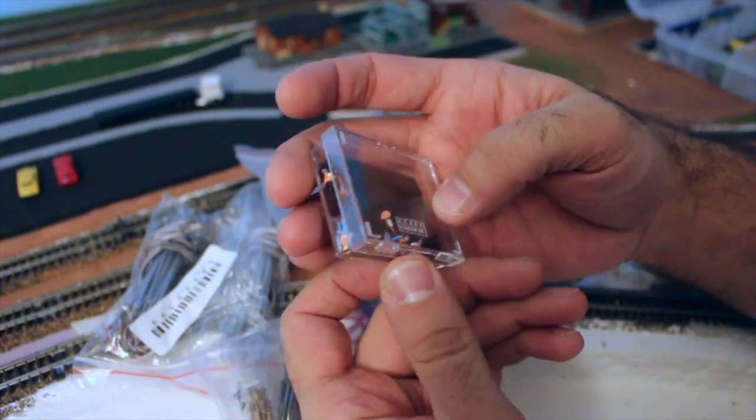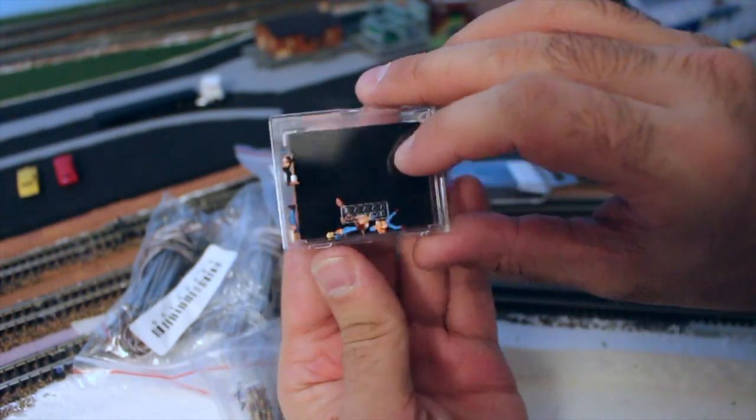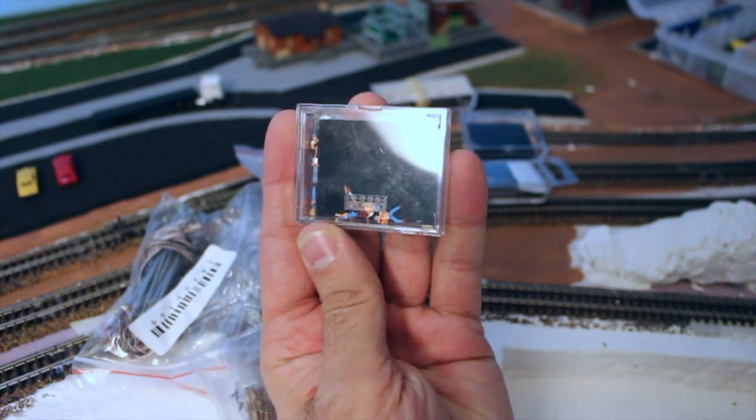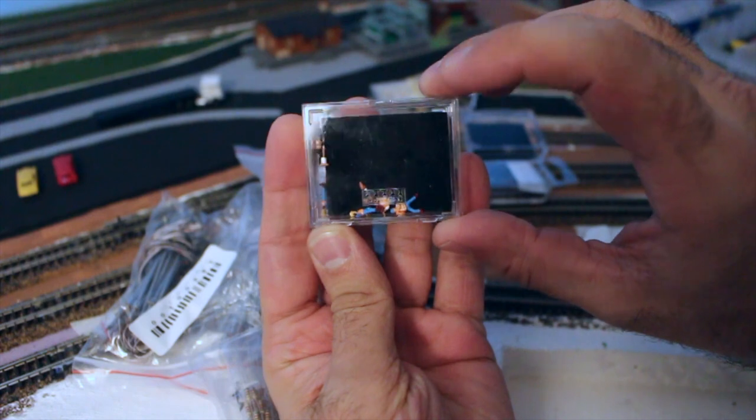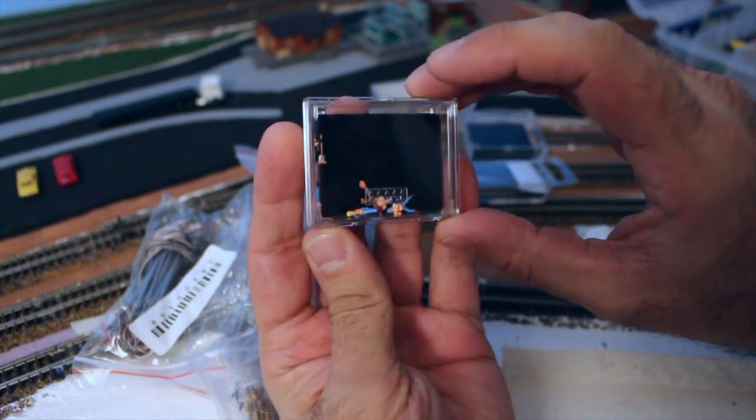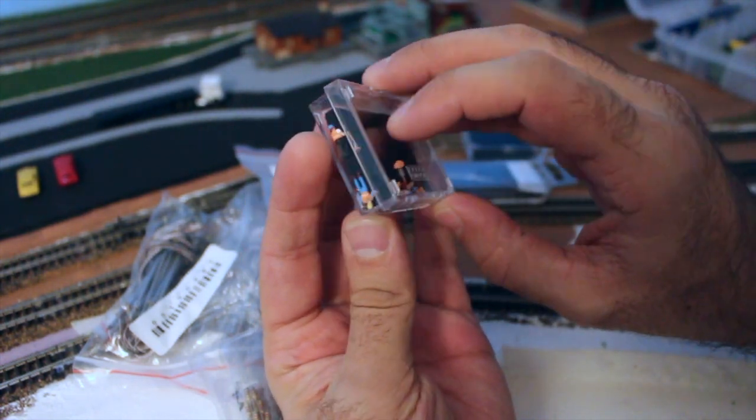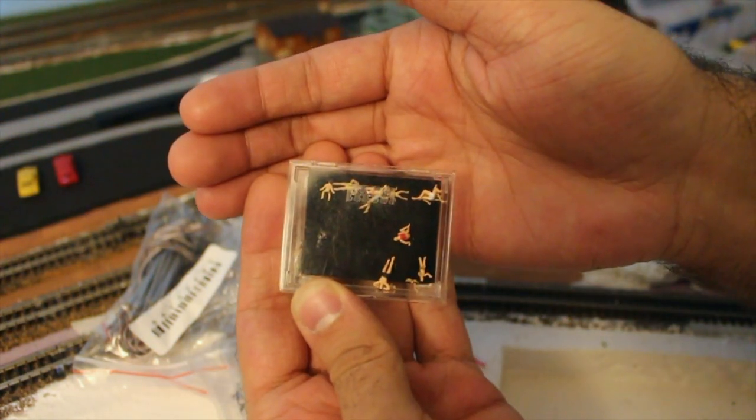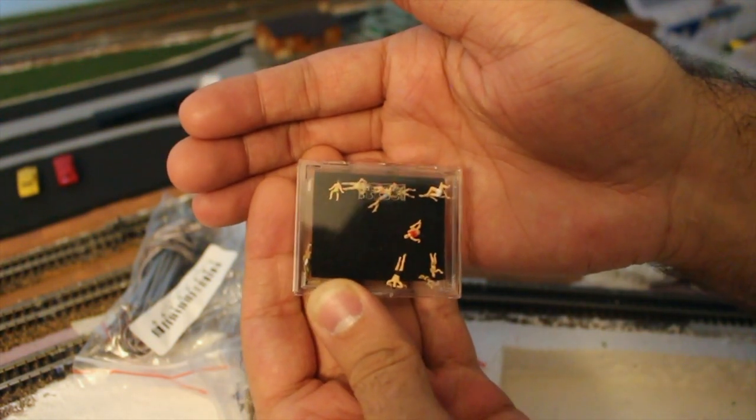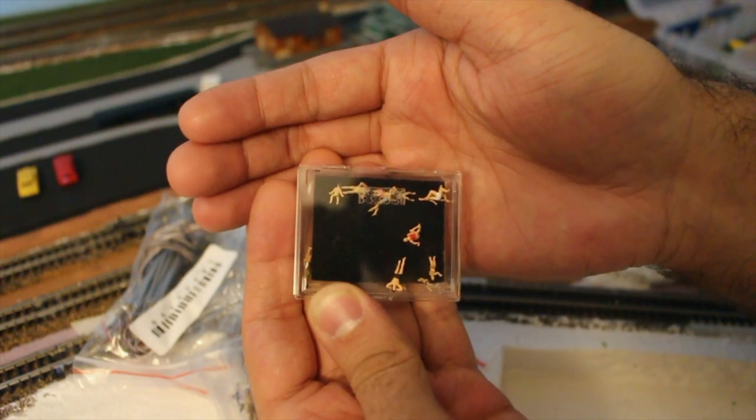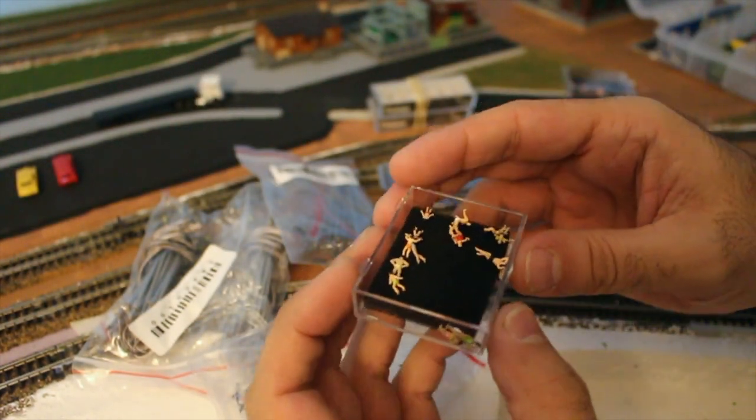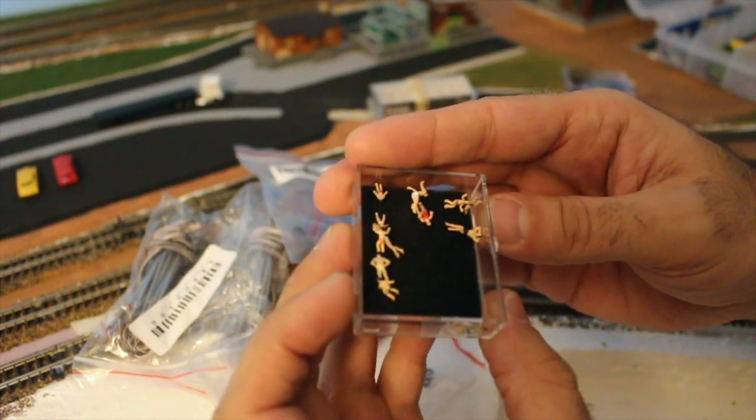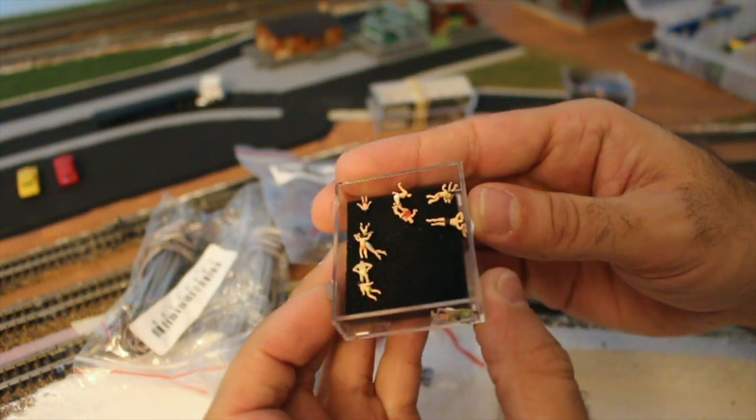Next, I think I showed you these guys. This is just a jewel case that came from one of my Digitrax decoders. I saved it and this is a good thing to use for storing these people. But I think I showed you these guys. These guys are my worker crew. This is from Preiser. These figures, I have kids at the beach.